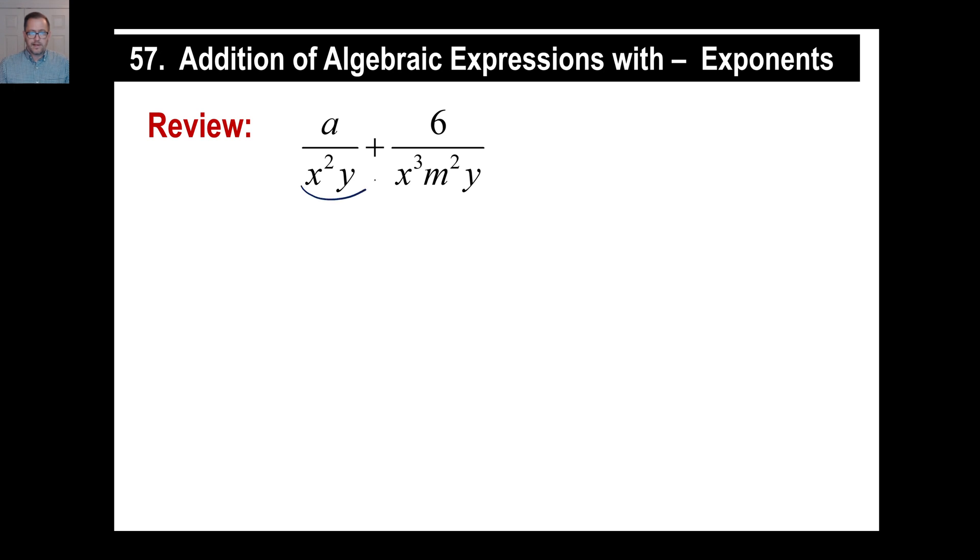Remember, when we have unlike denominators, we have to make them the same. So we have to figure out what do x²y and x³m²y both go into. The way you do that is look at each individual variable and go, well,